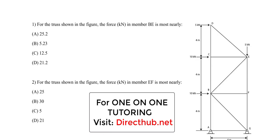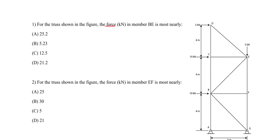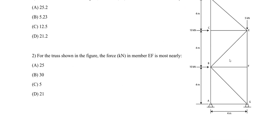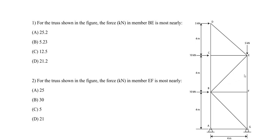Now I'm going to do a truss analysis question, and we're going to do Part 1 then Part 2 for the same truss. We're told: for the truss shown in the figure, the force in kilonewtons in member BE is most nearly what? So we're looking at what force, what member? BE is going to be this member. We're looking at the internal force in BE — that's the end goal here.